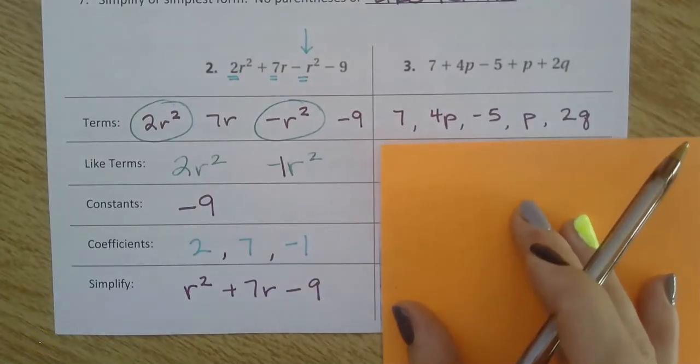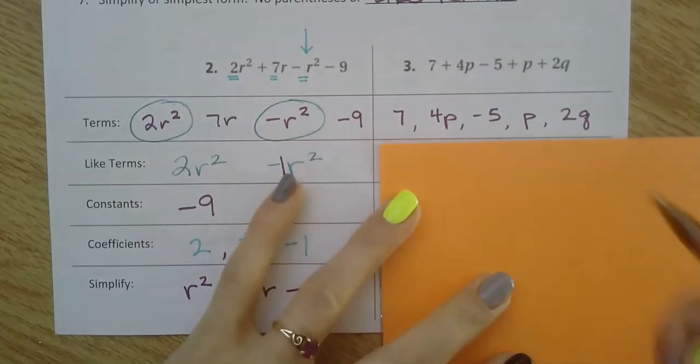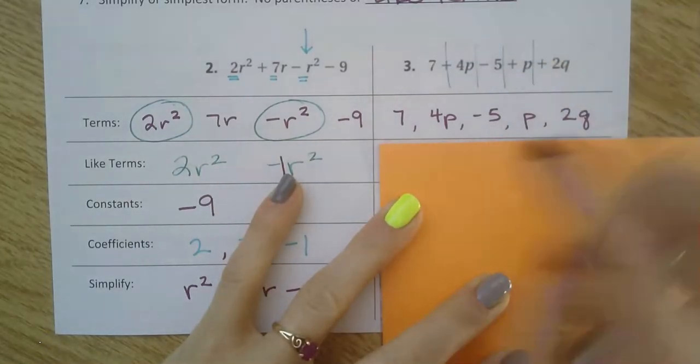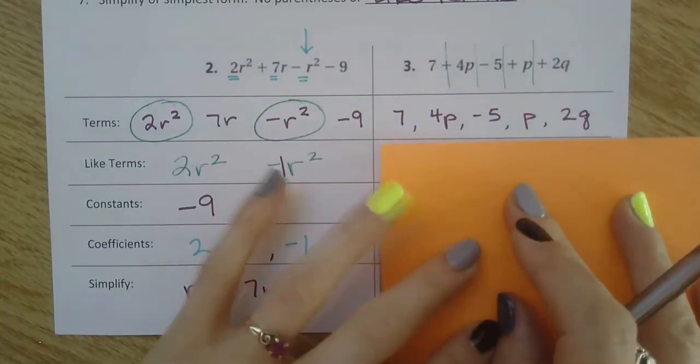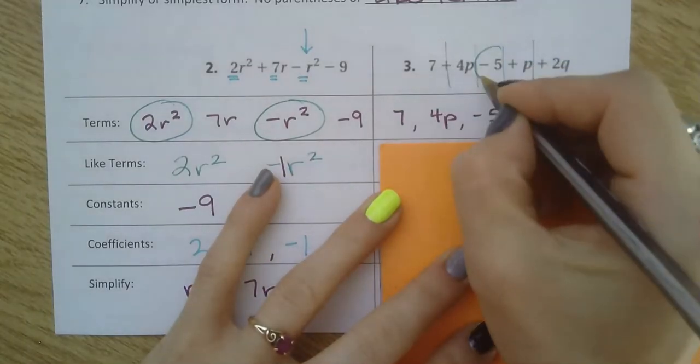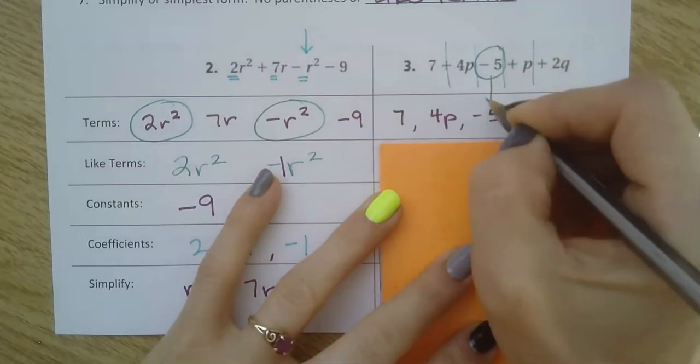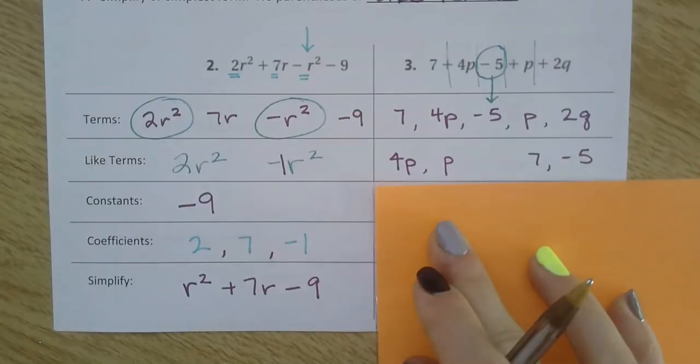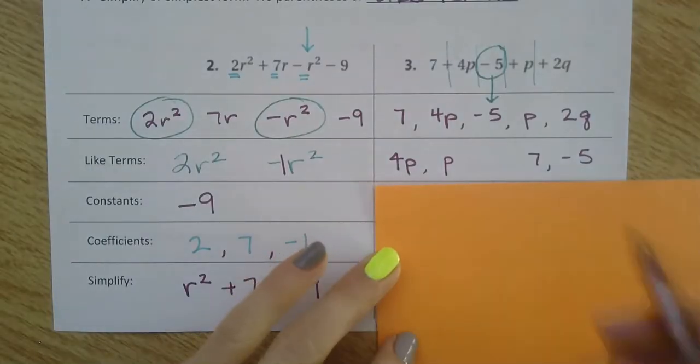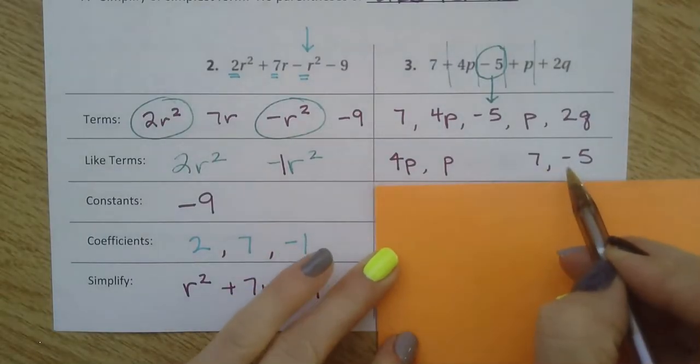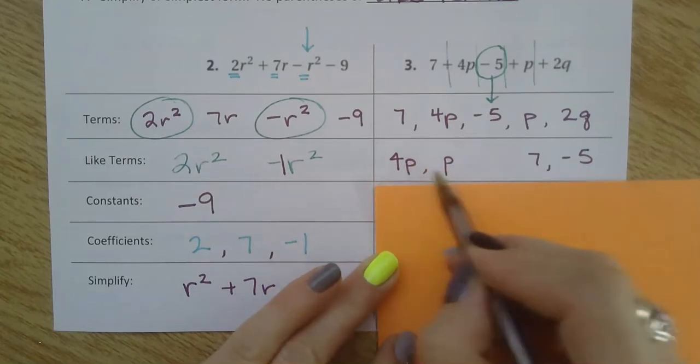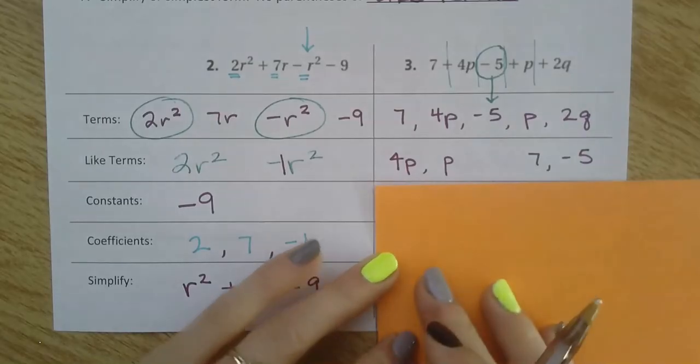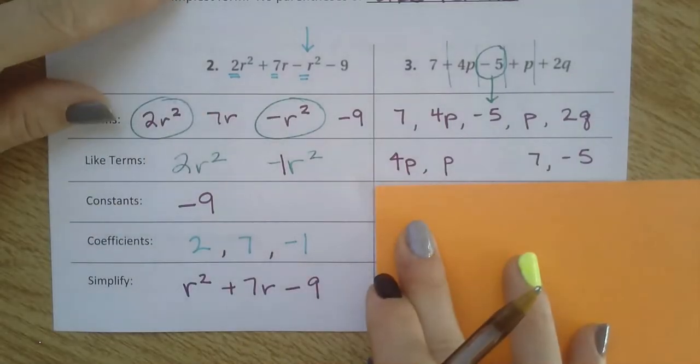If you're ready to check, here's my 5 terms. Remember if I split it at the plus and minus signs, I have these 5 terms that I listed out. Don't forget to include the negative, that's part of this term. Like terms - the 4p and the p are like terms with each other, and the 7 and negative 5 are like terms. This is one pair and this is one pair. There is no like term that goes with the q.